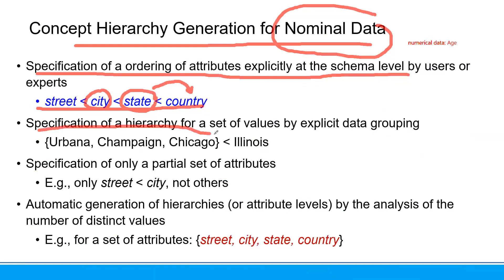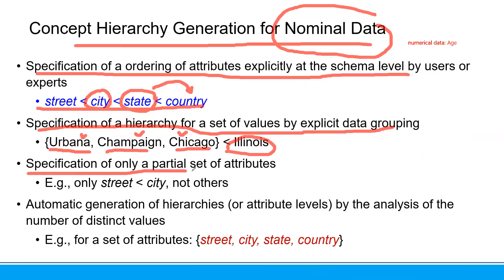The specification of the hierarchy for a set of values by explicit data grouping. In Yongin, we have Choingu, Sujigu, Gihenggu — those are a set of values belonging to Illinois in the example. Or we can also specify only a partial set of attributes — only street, which belongs to the city but not others. For example, Wang San Ri is in the street of Yongin, but there will be no other such street in another city.